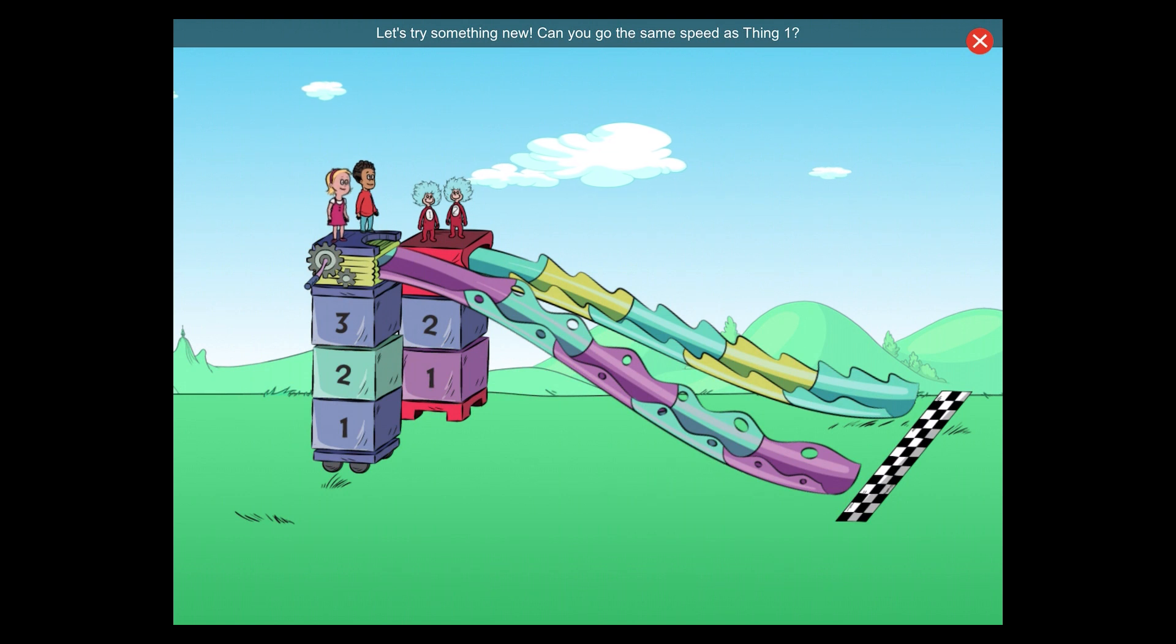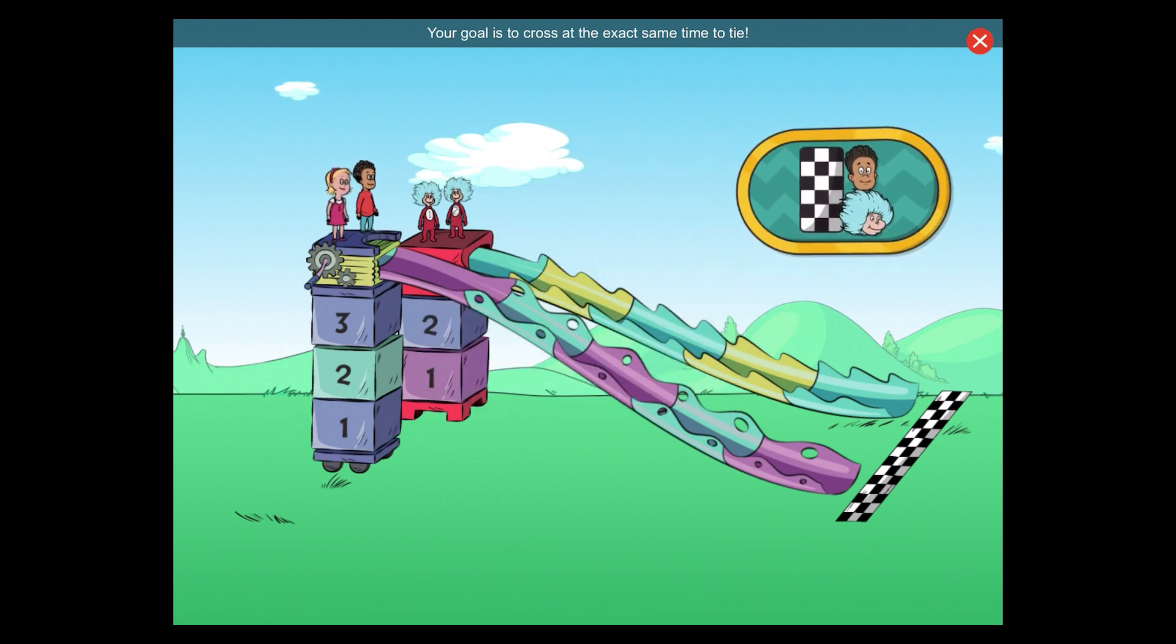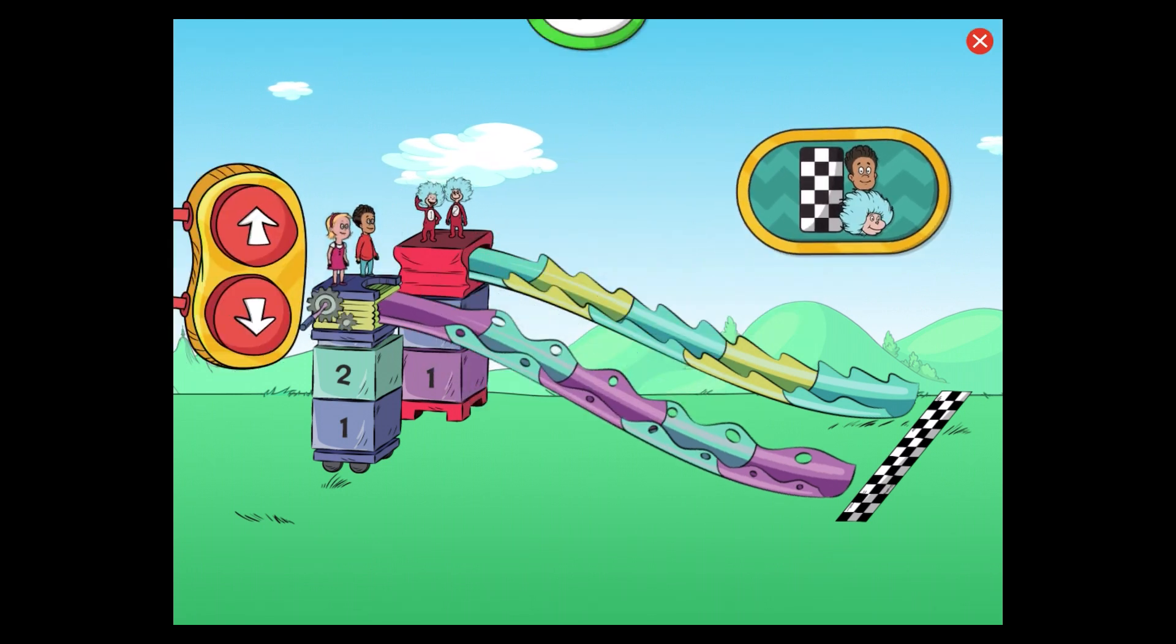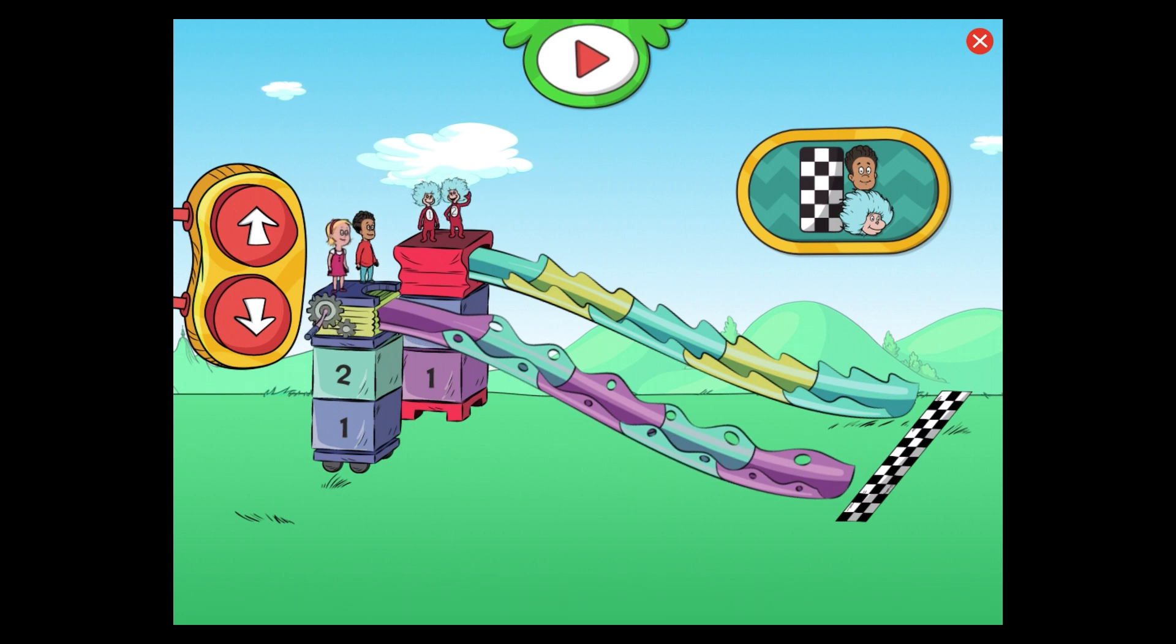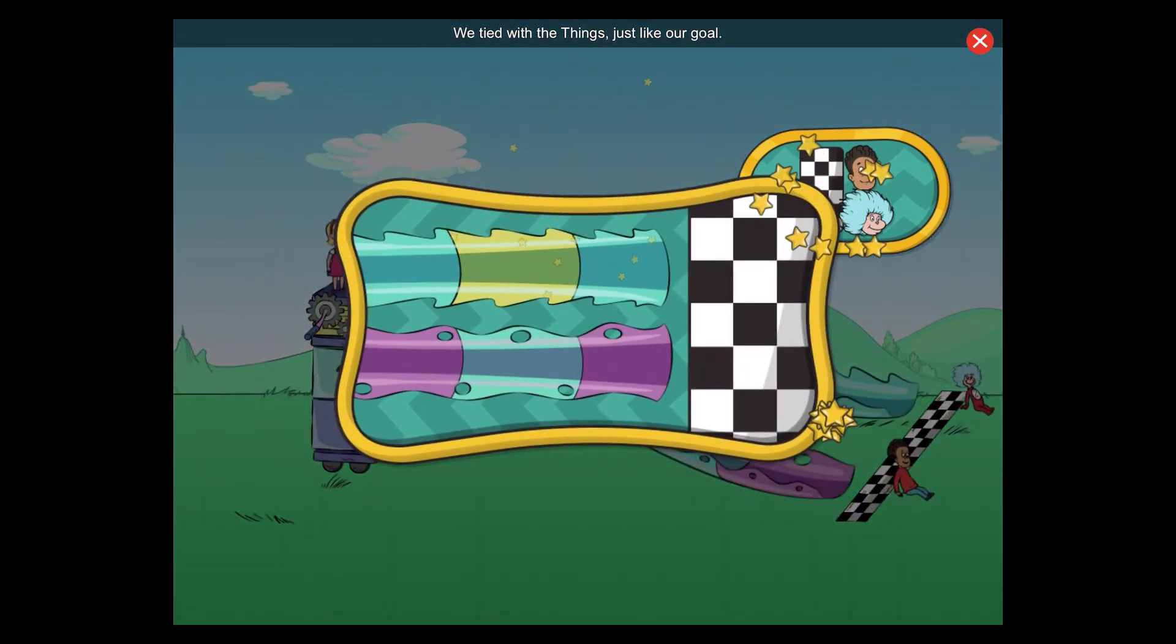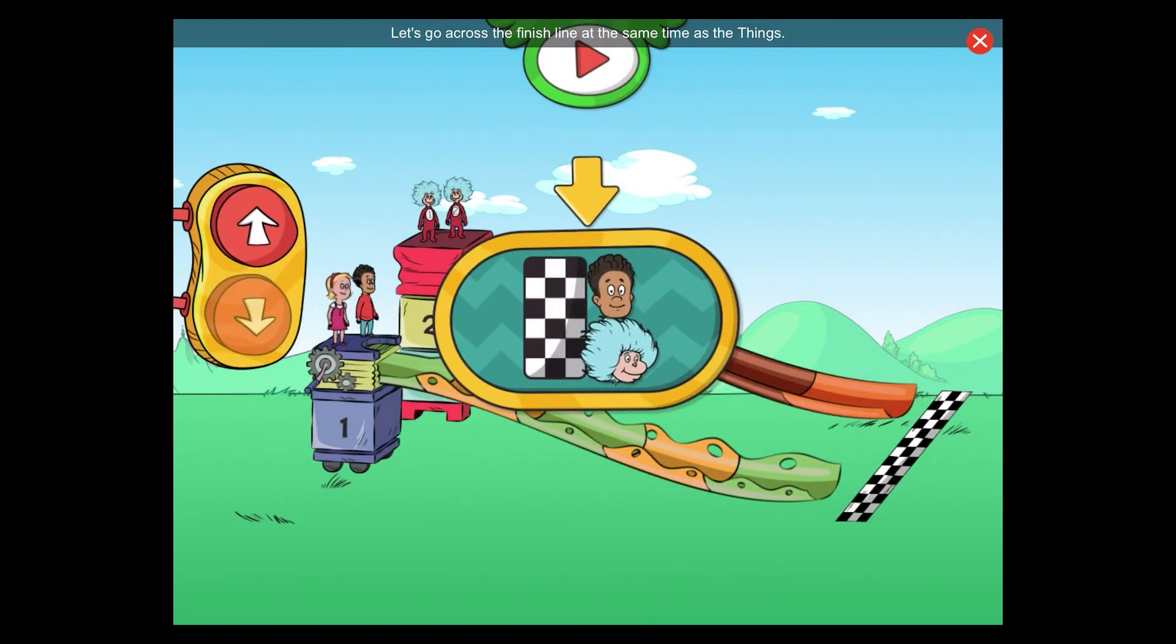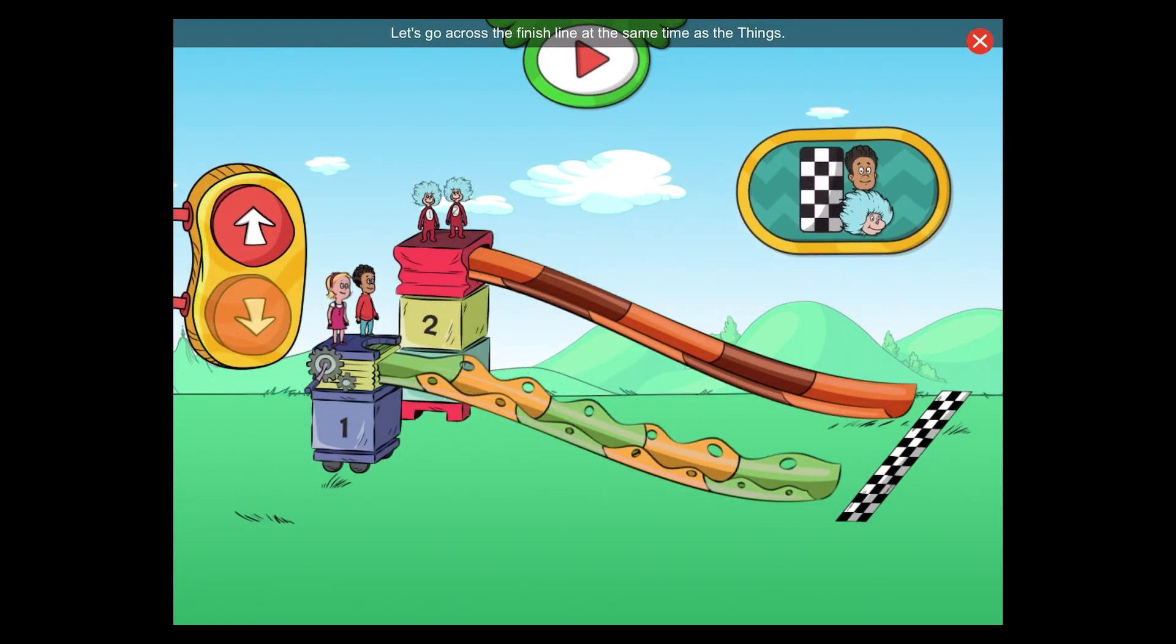Let's try something new! Can you go the same speed as thing one? Your goal is to cross at the exact same time to tie! Whee! We tied with the things, just like our goal.